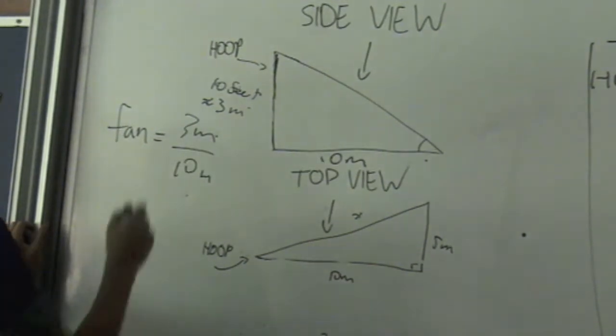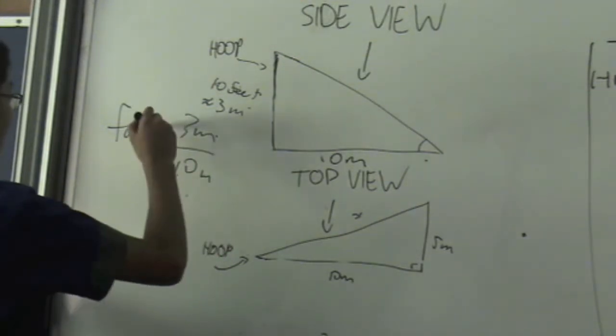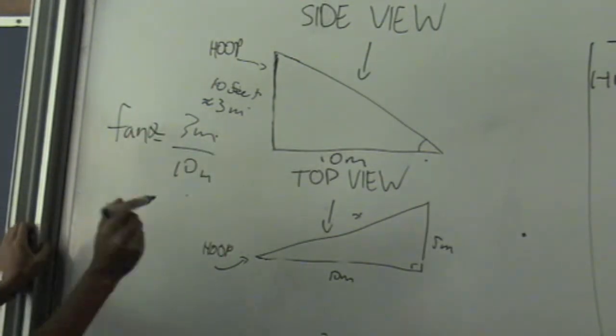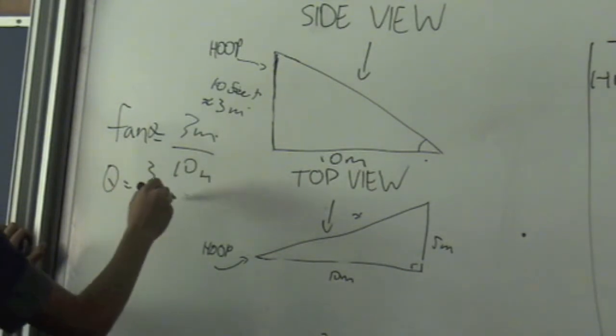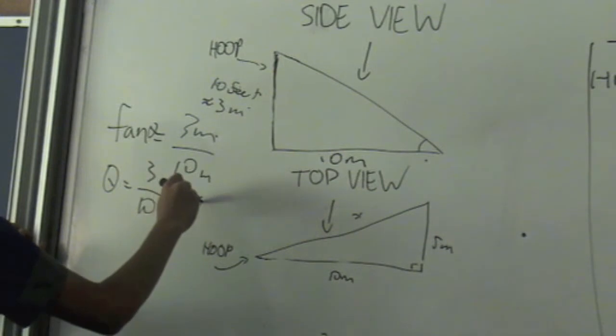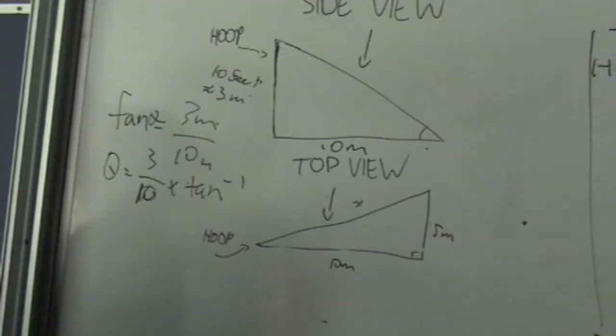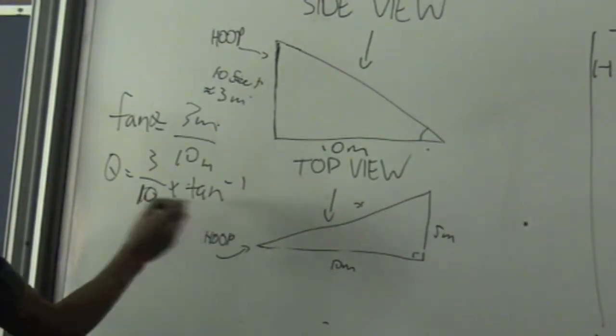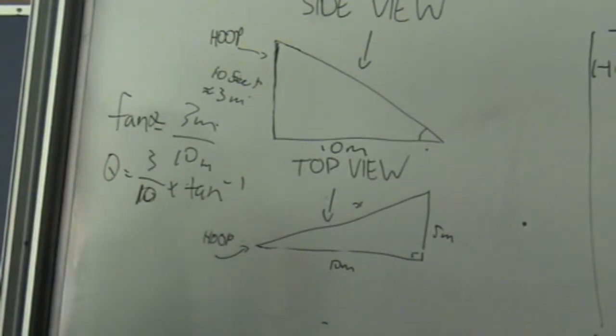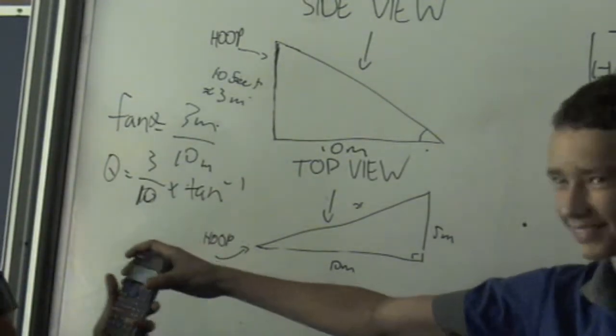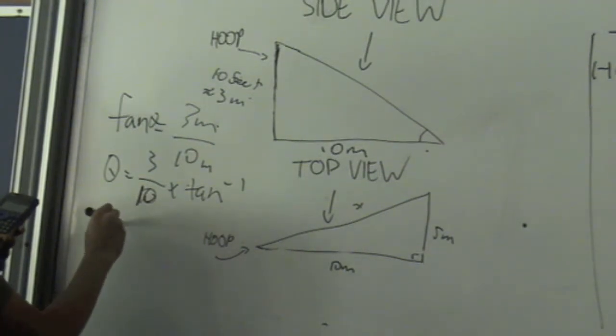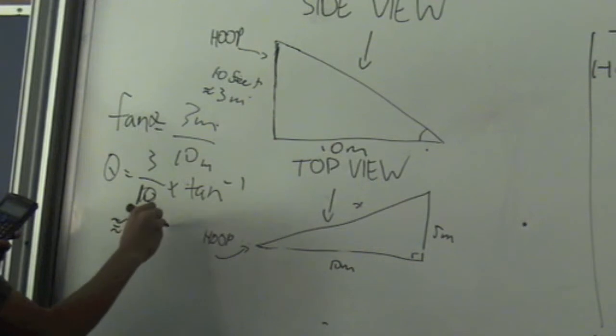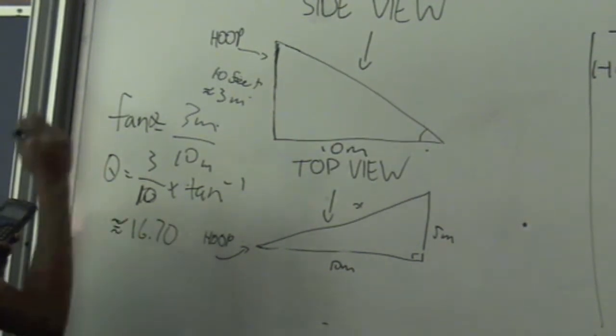So then the angle would be 3 over 10 times tan to the negative 1. Freeman, please do this messily written sign on your calculator please. Thank you very much. And the answer is approximately 16.70 degrees.